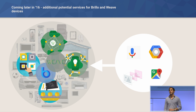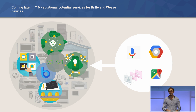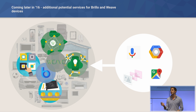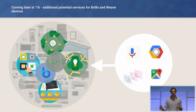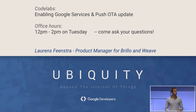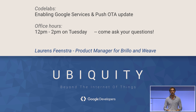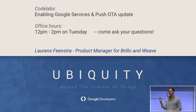Over the course of this year we'll start adding more services to Brillo and Weave devices. We'd like to get your input — what itches do you have that you'd like scratched? What functionality would you like to see in the Brillo and Weave platform? Tomorrow there will be office hours from 12 PM to 2 PM, so come ask your questions there. There are also code labs going on covering enabling Google services and pushing OTA updates. I'm Lawrence Wienstra, product manager, and I hope to see you there. Thank you.